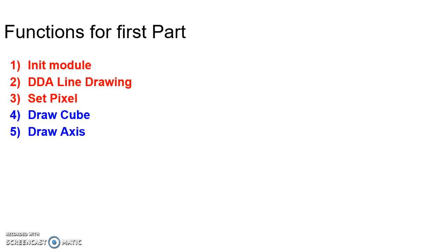In the first part, we need 5 important functions: initialization module, DDA line drawing module, set pixel module, draw cube, and draw axis. We are already familiar with the first three modules — the initialization module, which is needed to create the window on which we will draw our object; the DDA line drawing module, needed to draw lines for the cube; and the set pixel module, which is the basic module. So we will directly start with the remaining two modules: how to draw a cube and how to draw axis.